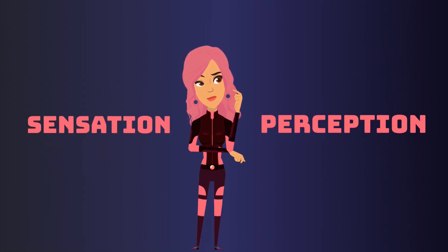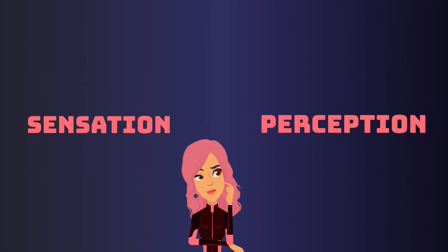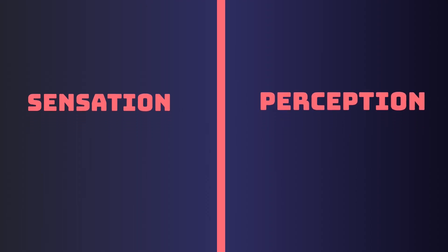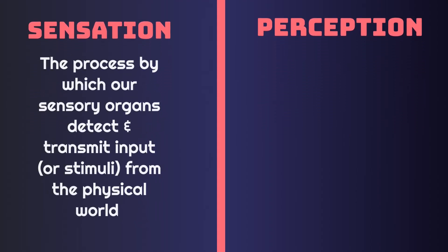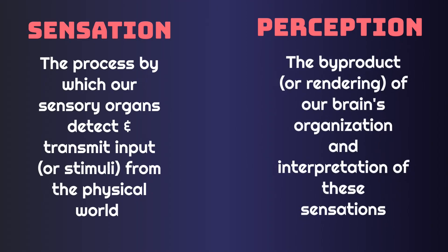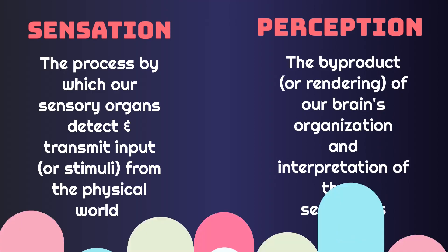Many often confuse sensation and perception, and though the two are intricately tied to one another, they are indeed separate processes. While sensation is the process by which our sensory organs detect and transmit input from the physical world, perception is the byproduct of our brain's organization and interpretation of the sensation.